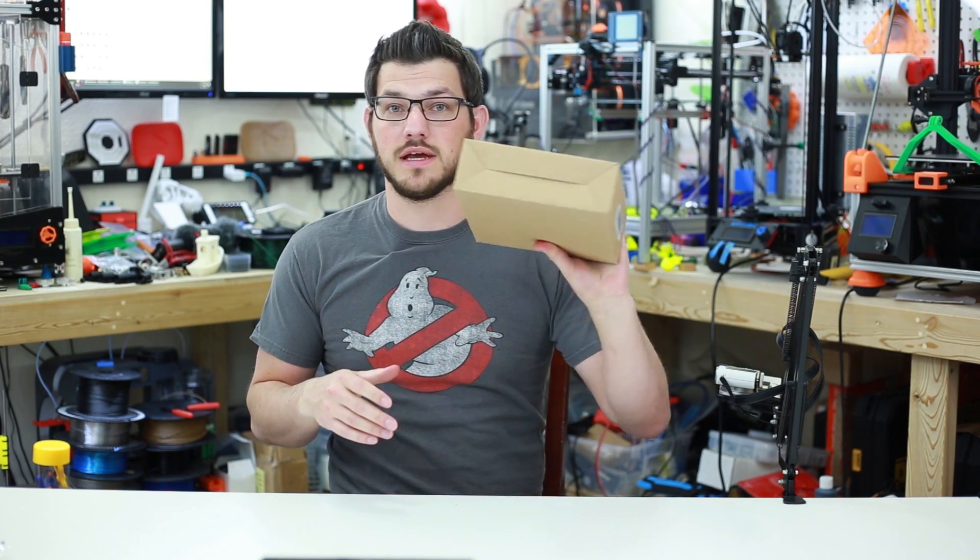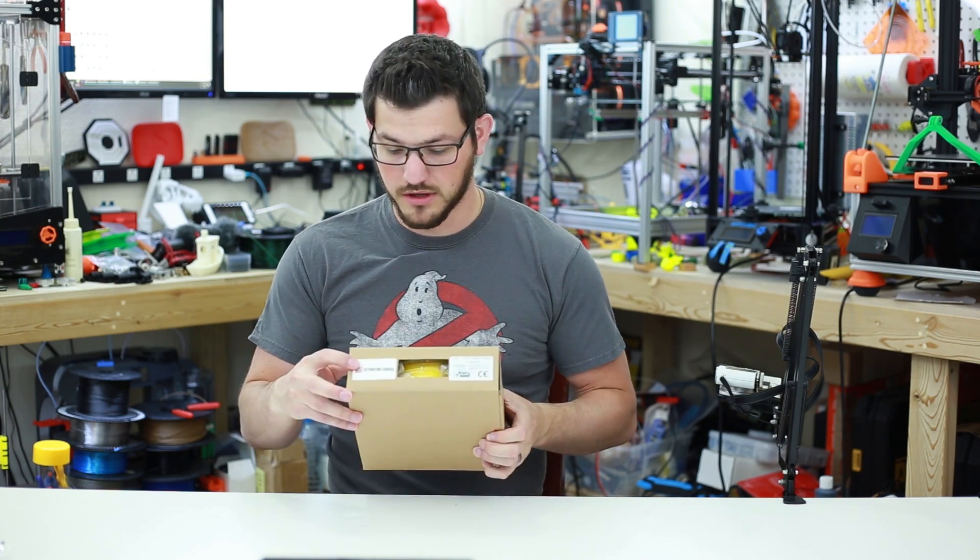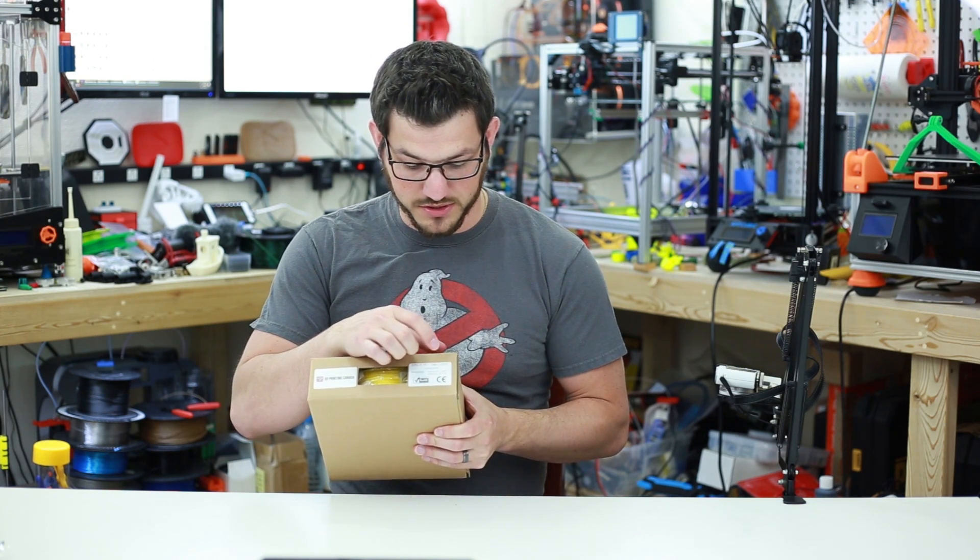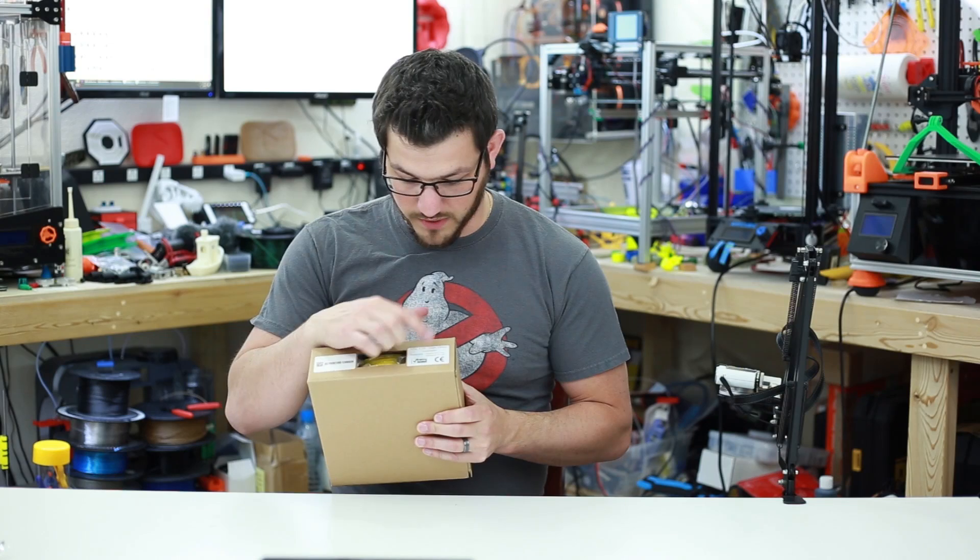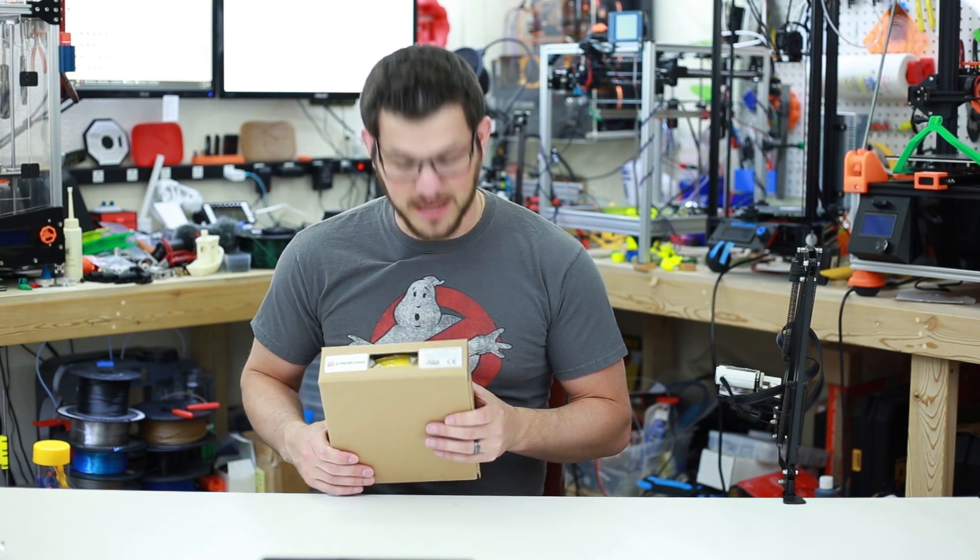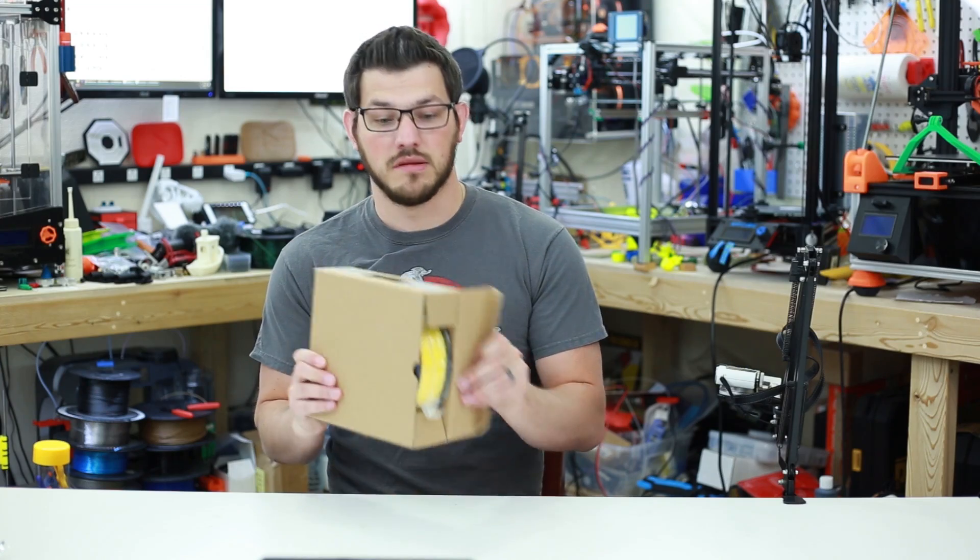It's a super plain brown box with a 3D Printing Canada sticker right here. It tells you it's TPU, 1.75mm, dark yellow, a SKU code, recommended nozzle 220-240, and the bed 70-85, 75-85 on the bed.